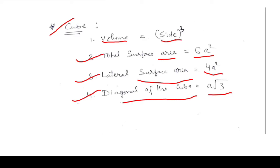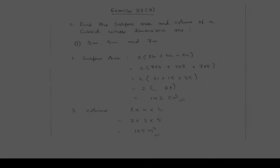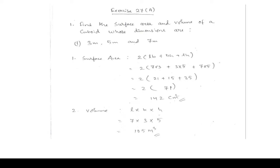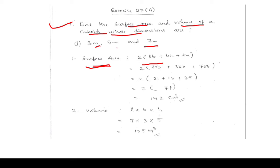Now let us do some questions of Exercise 27A. Question 1: Find the surface area and volume of a cuboid whose dimensions are 3 m, 5 m, and 7 m. The formula for surface area is 2(lb + bh + lh).